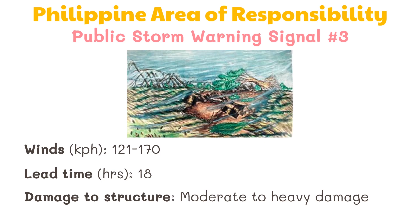In Signal Number Three, winds of 121 to 170 kilometers per hour may be expected in at least 18 hours. Moderate to heavy damage is expected to structures. When on Signal Number Three, avoid riding in any sea craft, seek shelter in strong buildings, evacuate from low-lying areas, and stay away from coasts and river banks.